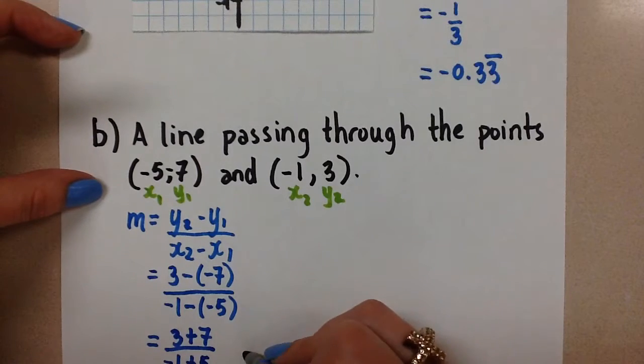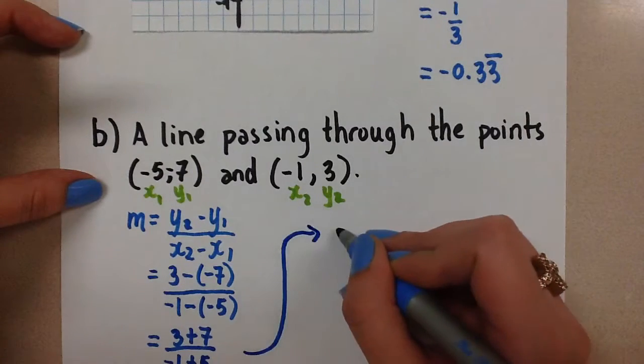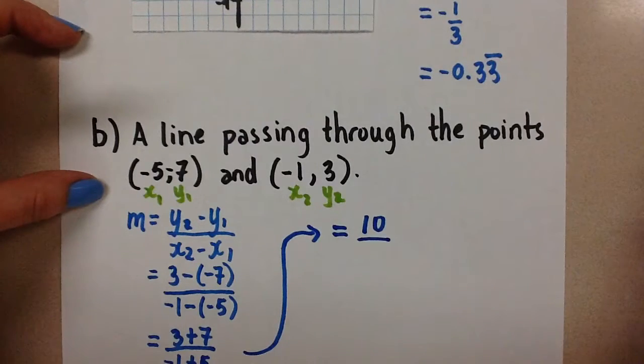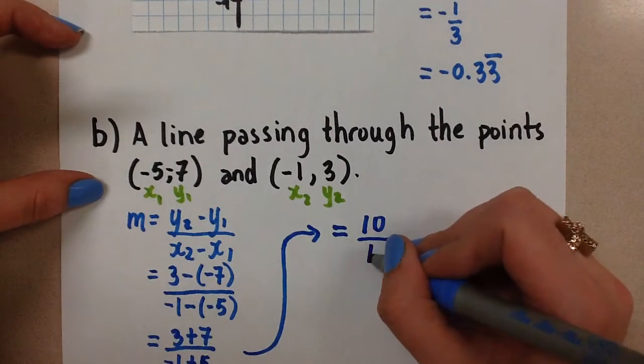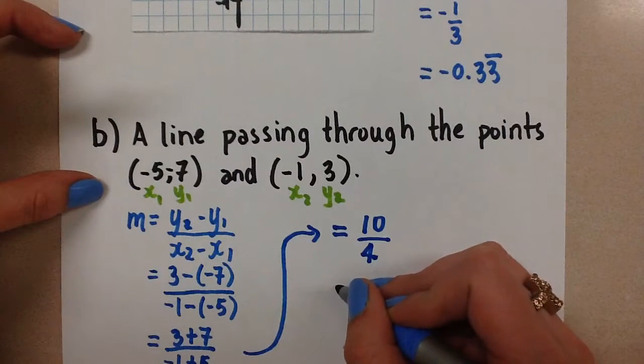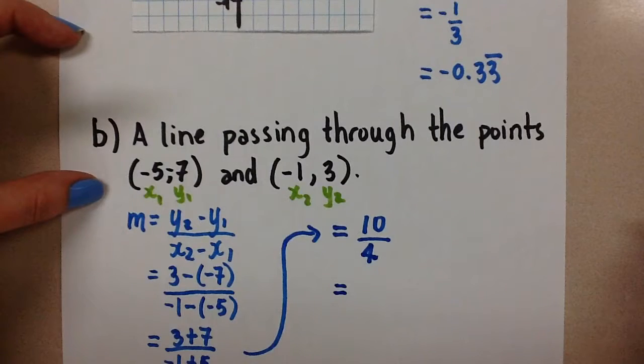So I've run out of space, so I'm just going to go up here and continue. 3 plus 7 is 10, over negative 1 plus 5 is 4. Both values are positive, so we're going to have a positive slope here. That means this line would be going up and to the right.